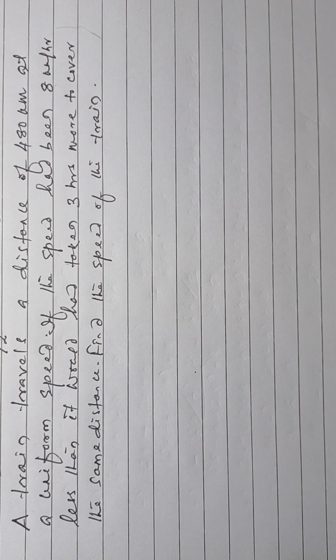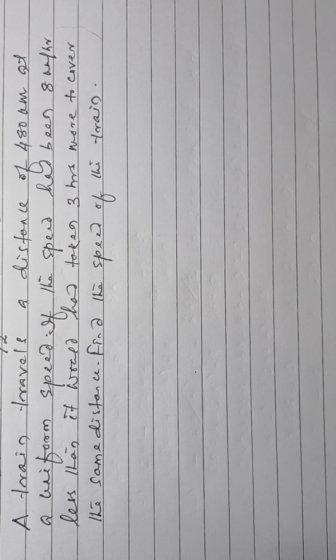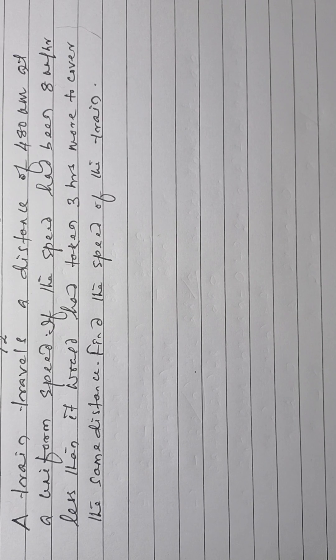A train travels a distance of 480 km at a uniform speed. If the speed had been 8 km per hour less, then it would have taken 3 hours more to cover the same distance. Find the speed of the train.